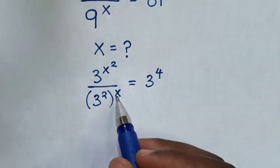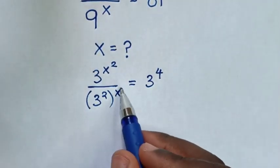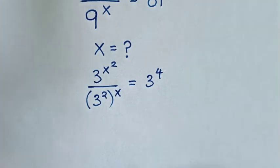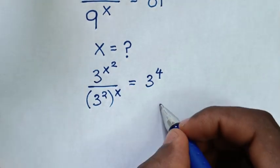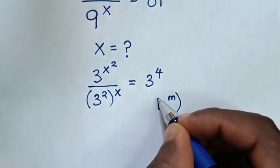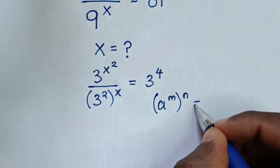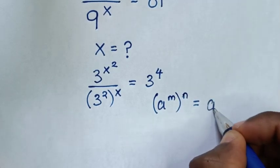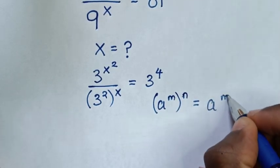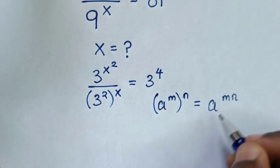Then from this denominator, we'll apply the exponential rule that a power of m, bracket power of n, is equal to a power of m times n.